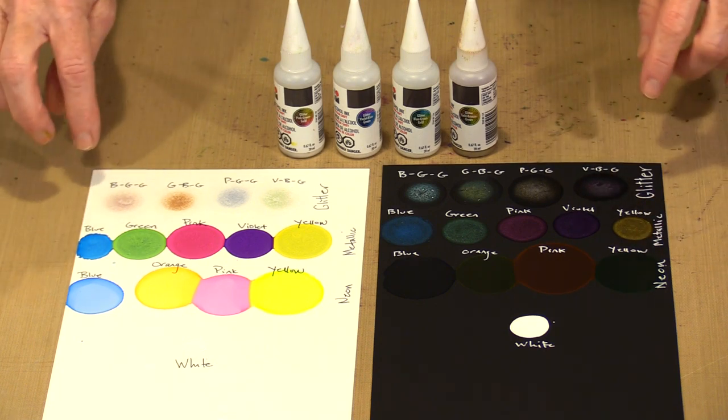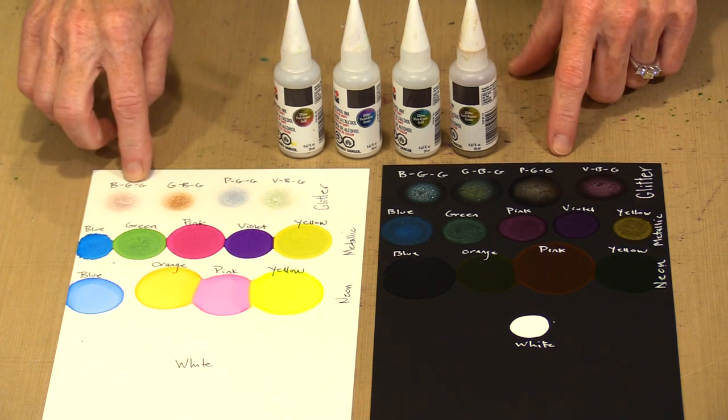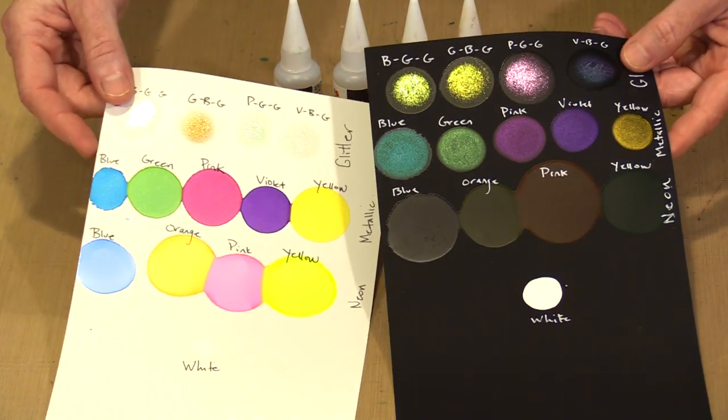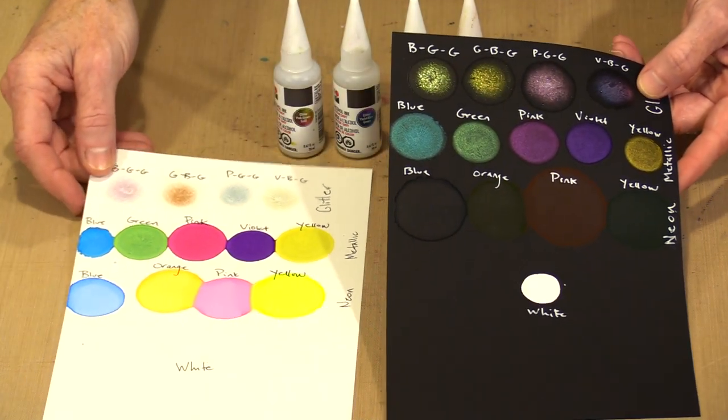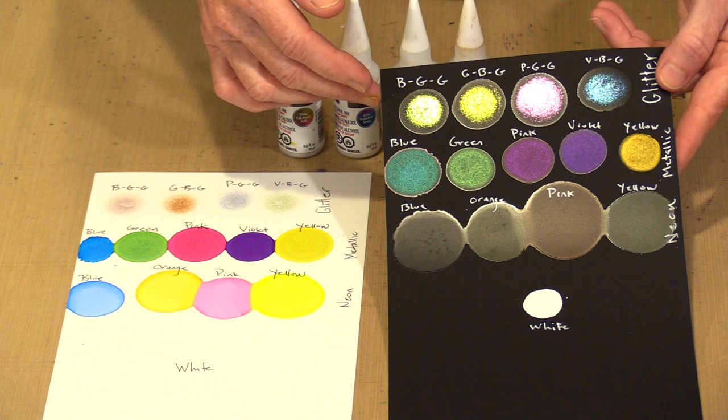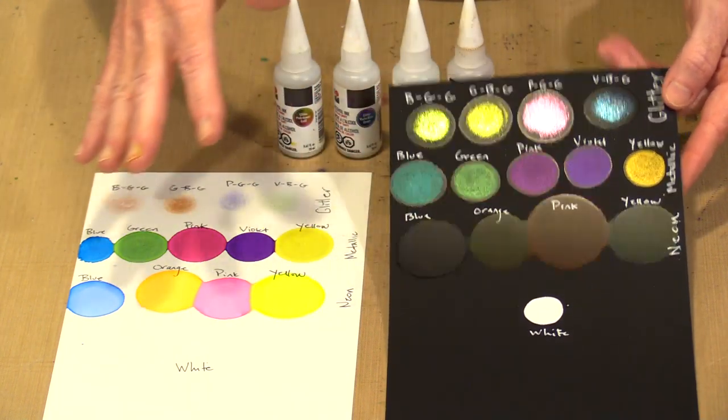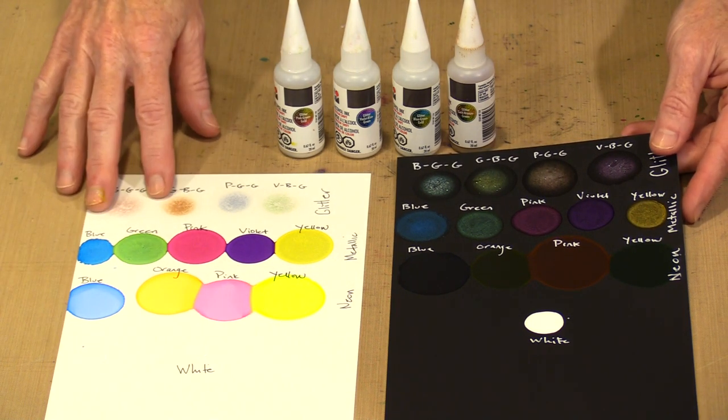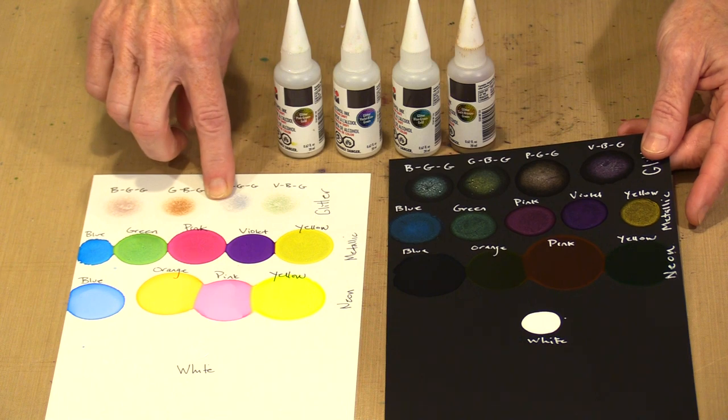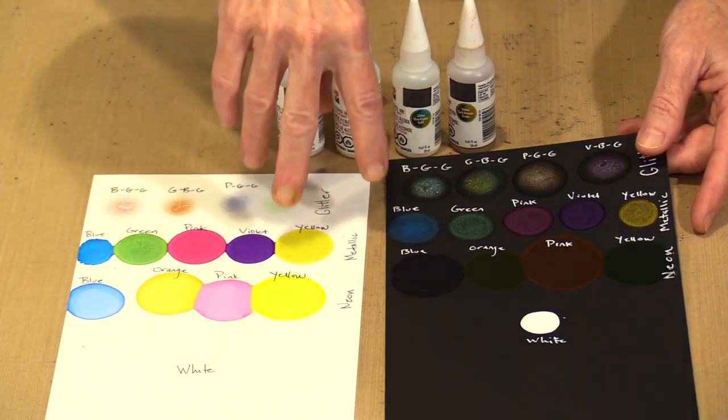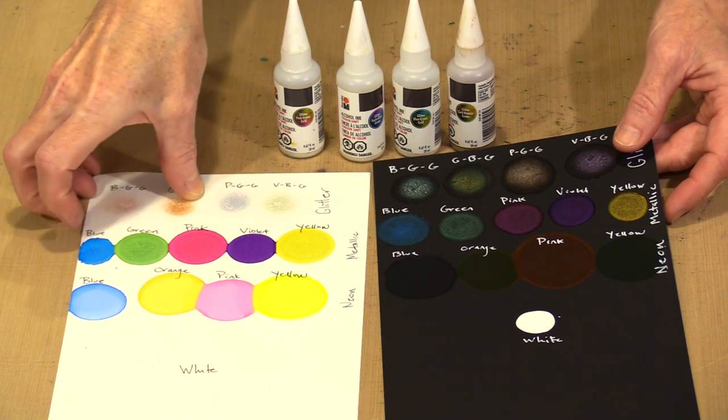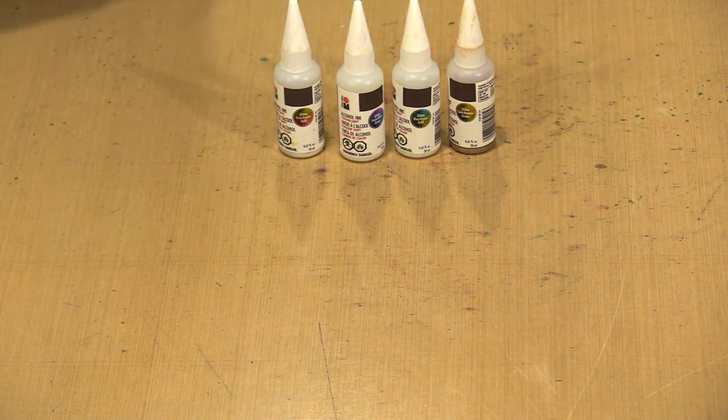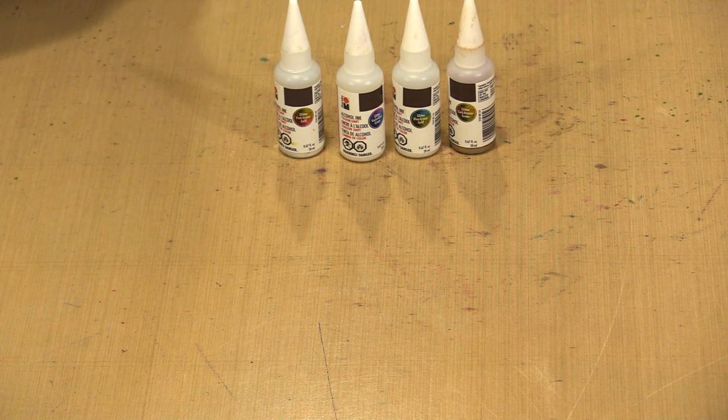You can see my swatch cards here with my cryptic notation about what the colors are. You can see that the difference on black and on white is quite significant. The neons you virtually can't see at all, except for depending on the angle of the light. The angle of the light is going to be important to all of these, especially with the glitter colors because they kind of shift color. Let me grab a piece of black and a piece of white, and I'm just going to drop some colors.